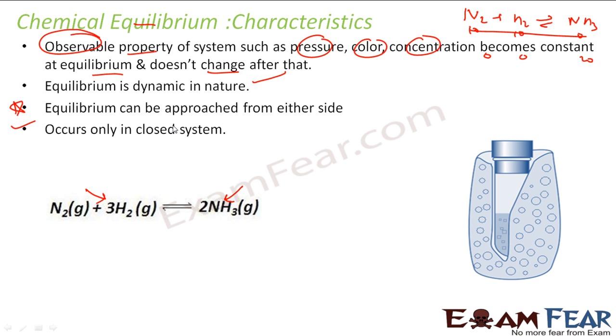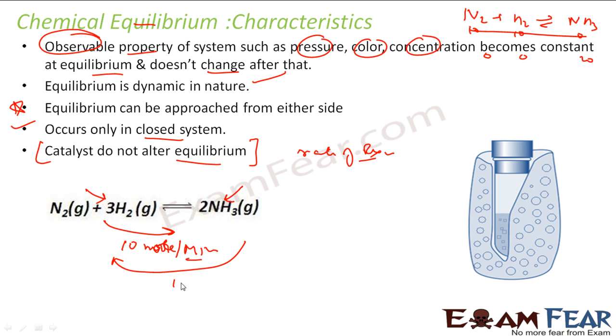Catalysts don't alter the equilibrium. We will discuss more about this. It increases the rate of reaction but it won't alter the equilibrium because it will increase the rate of reaction both for forward and reverse. If the rate of formation of this is, let's suppose, 10 moles per minute without catalyst, and this also is 10 moles per minute, then the moment you add catalyst, both may become 50 moles per minute.